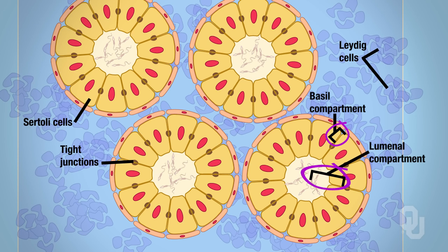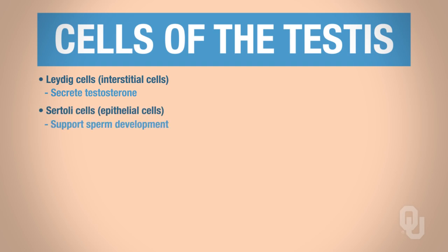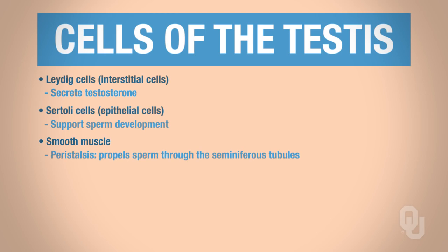Now that you are familiar with the structures, let's focus on their functions. We begin with the Leydig cells, also called interstitial cells. The Leydig cells secrete testosterone. The Sertoli cells support sperm development, or what is referred to as spermatogenesis. The smooth muscle surrounding these Sertoli cells allows for peristalsis, which propels sperm through the seminiferous tubules.